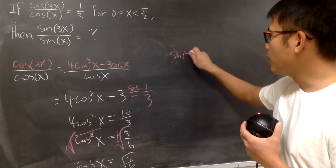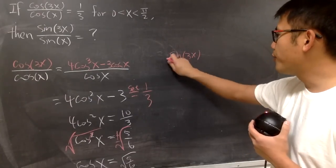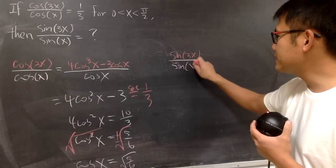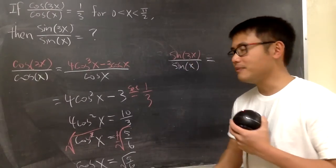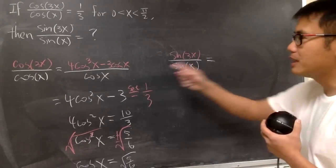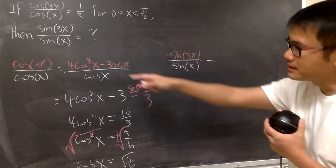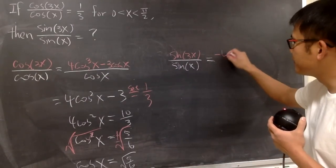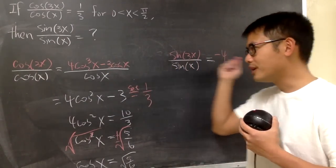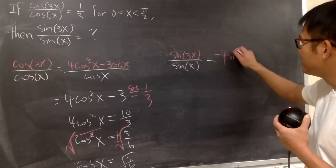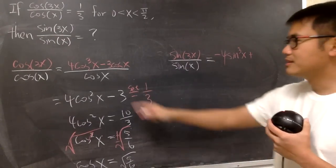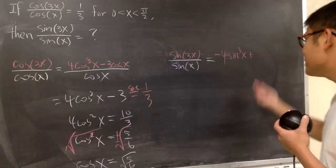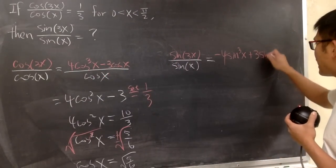If you look at sin(3x) over sin(x), on the top, by the triple angle identity, this is going to be, and by the way, it's pretty similar. Instead of positive 4, you will have minus 4, and this is sine, of course. You end up with -4sin³x and then this is plus, earlier it was minus, but now plus 3sin(x).